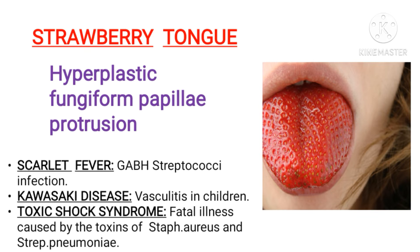Therefore, strawberry tongue is nothing but hyperplastic fungiform papillae protrusion. It is most commonly seen in scarlet fever, Kawasaki disease, and toxic shock syndrome. Scarlet fever is caused by group A beta-hemolytic streptococci, most commonly S. pyogenes, and occurs in children between 3 to 15 years. Kawasaki disease is a medium vessel vasculitis occurring in children below 5 years. So in any child below 15 presenting with strawberry tongue, the most common cause is scarlet fever, and below age 5, it is most commonly Kawasaki disease.